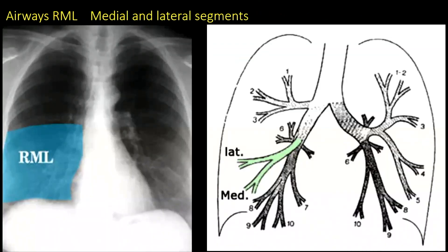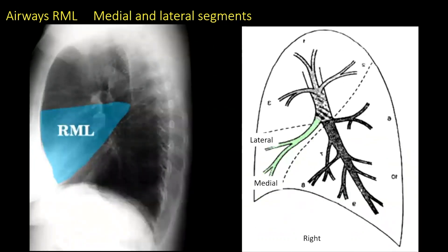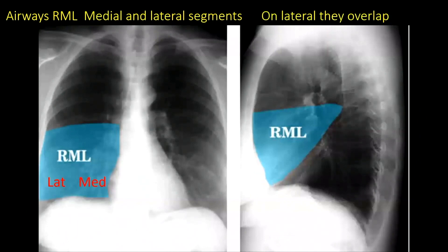The right middle lobe is familiar to all of us, with the smooth upper border representing the minor fissure, and it has a lateral and medial segment. On the lateral film, the minor fissure is at the top of the right middle lobe and the major fissure is posteriorly. The lateral and medial segments overlap each other on the lateral film, but on the PA you can clearly differentiate the lateral and medial segments.